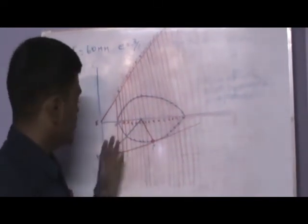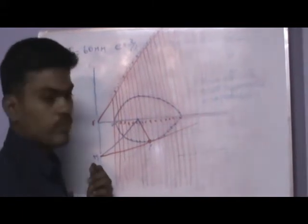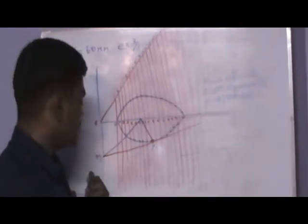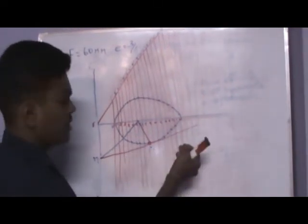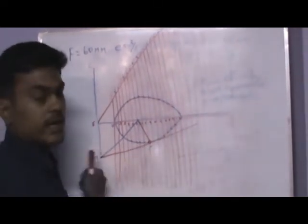That is, I have given M here, which meets the directrix at a point M. And from M, draw a straight line. It touches the point P. This is your tangent.